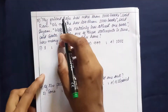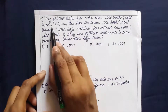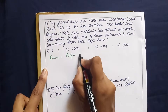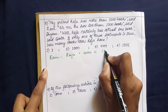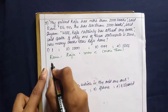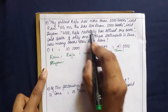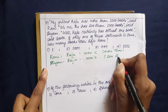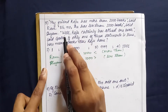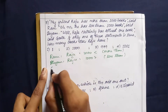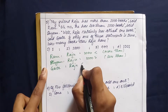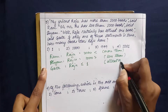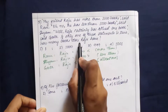Moving on to the third question. My friend Raju has more than 1000 books, said Ram. Shyam says he has less than 1000 books. Gita says Raju certainly has at least one book. From this, if only one of these statements is true, how many books does Raju have?